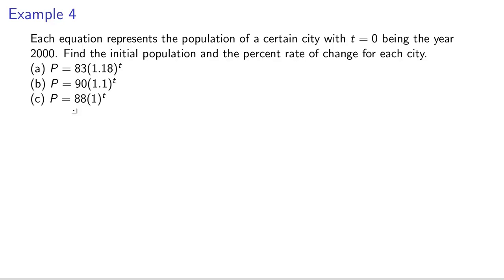The first thing we want to do is we want to find the initial population for each of these three cities. If you remember, the form of our equation was P equals P0, our initial population, times a, which is some growth factor, to the power of t. So in each of these equations, my P0 here is 83, my P0 in b is 90, and my P0 in c is 88.